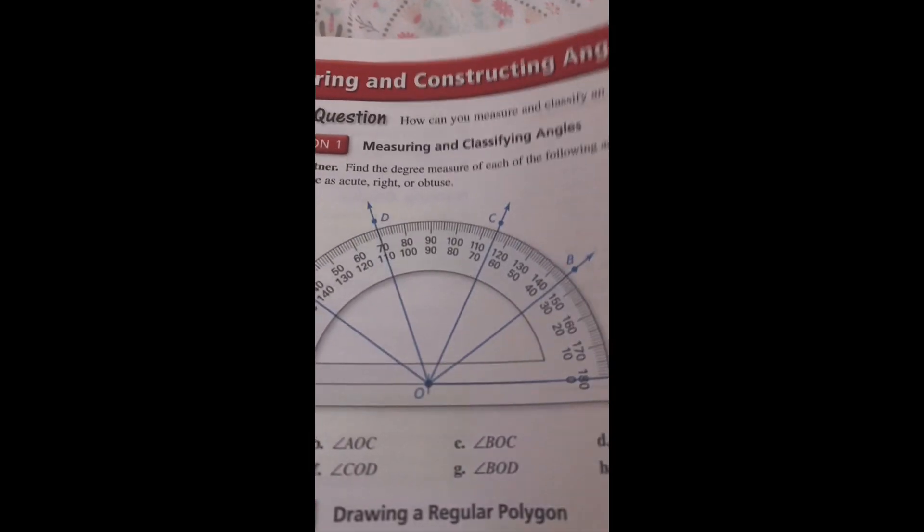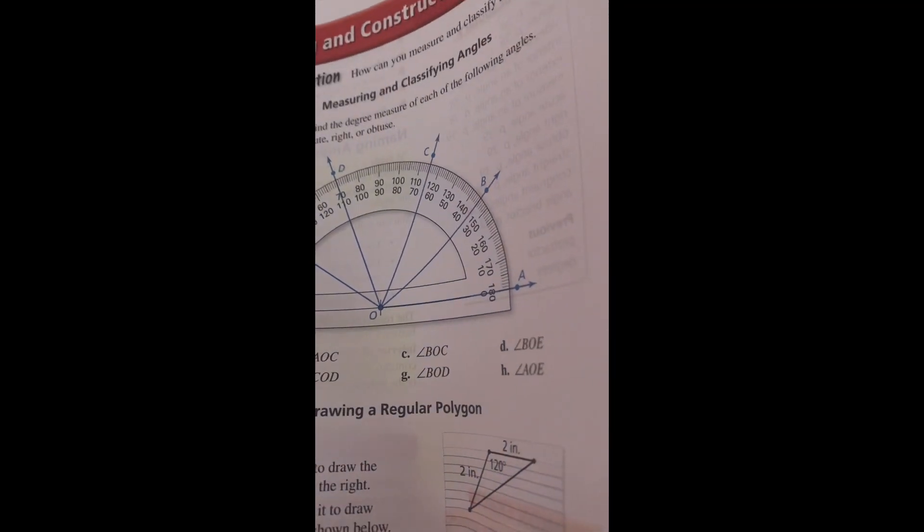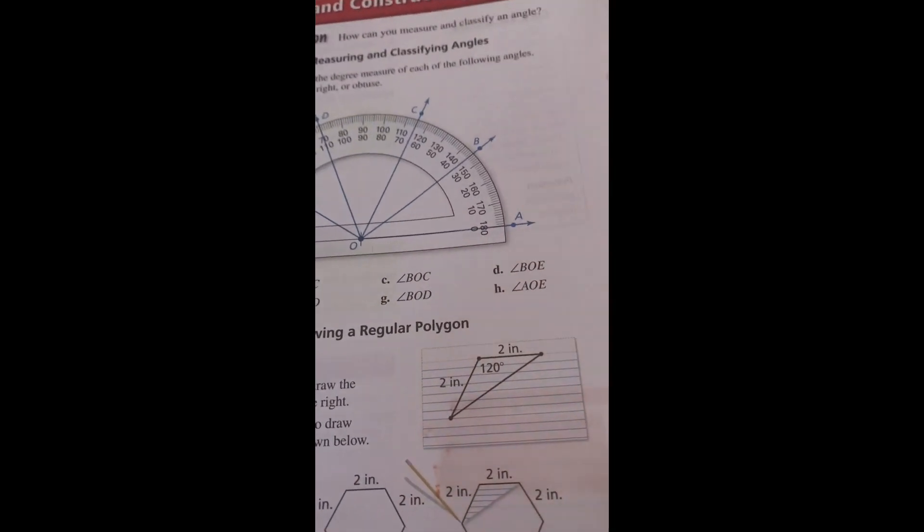1.5 Measuring and Constructing Angles. Attending to Precision: To be proficient in math, you need to calculate and measure accurately and efficiently. Common Error: When the point is the vertex of more than one angle, you cannot use the vertex alone to name the angle.